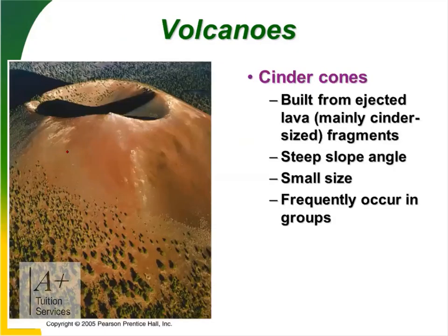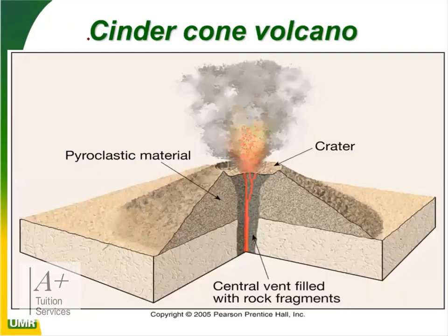Cinder cones are built from ejected lava, mainly cinder-sized fragments. They have steep angles, are small in size, and frequently occur in groups. Cinder cones are a byproduct of a volcano but have potential to erupt. They look like very tiny volcanoes. The anatomy includes pyroclastic material building up from each eruption, the vent, and the crater.